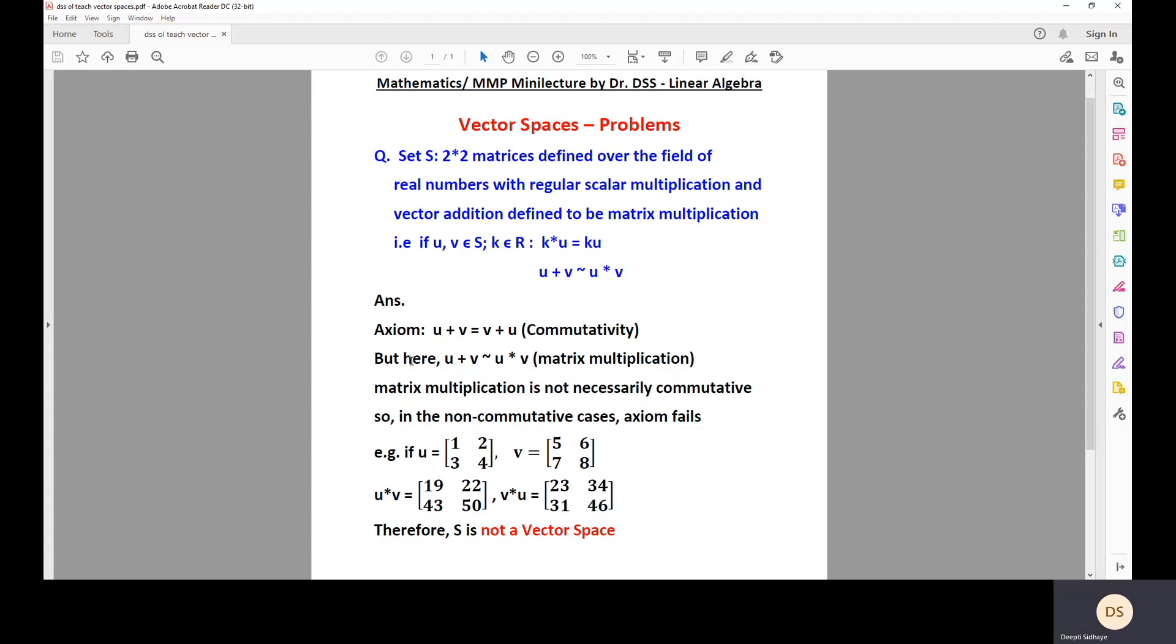But now we also know that matrix multiplication is not necessarily commutative. And here, addition of two vectors is defined in terms of matrix multiplication. Let me show you an example.